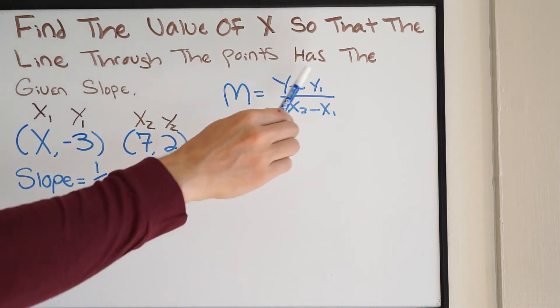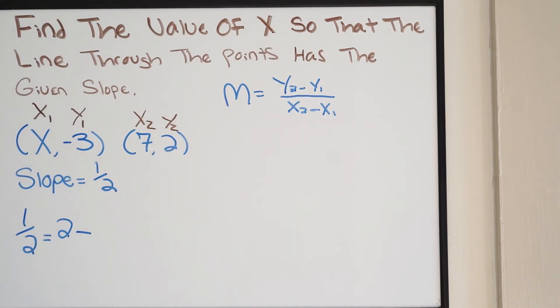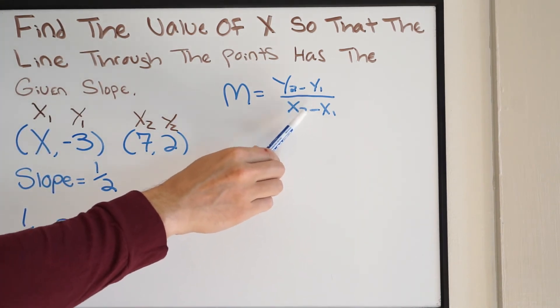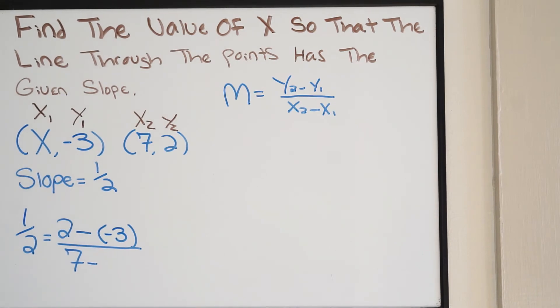And then I include the minus sign, because that's part of our equation. y1 is going to be negative 3. Let's work on the denominator. x2 is going to be 7. Include the minus sign, because again, that's part of the equation. And then x1, well, we don't know what that is. That's what we're trying to solve for. So I'm just going to put the variable here, which is x.